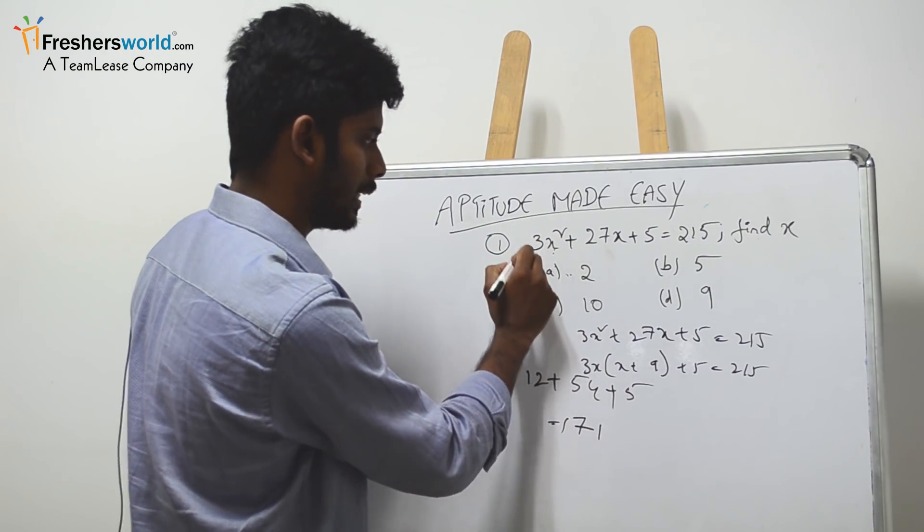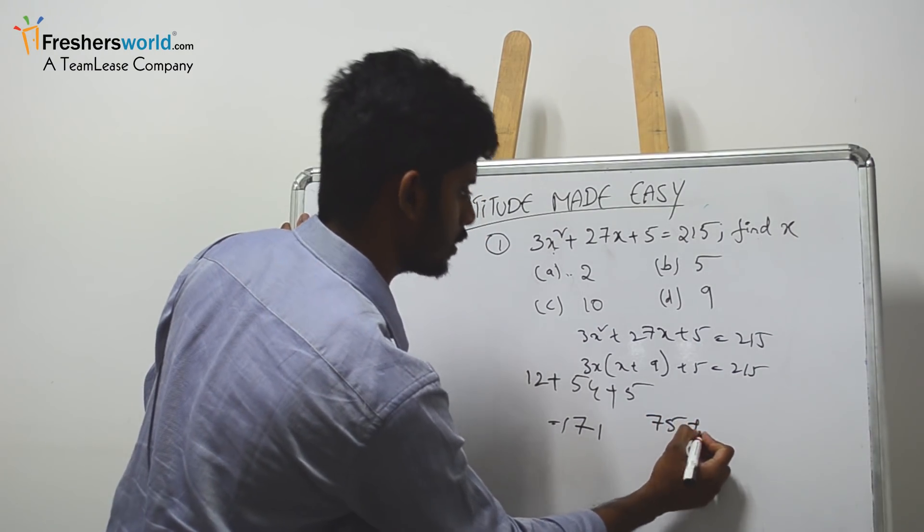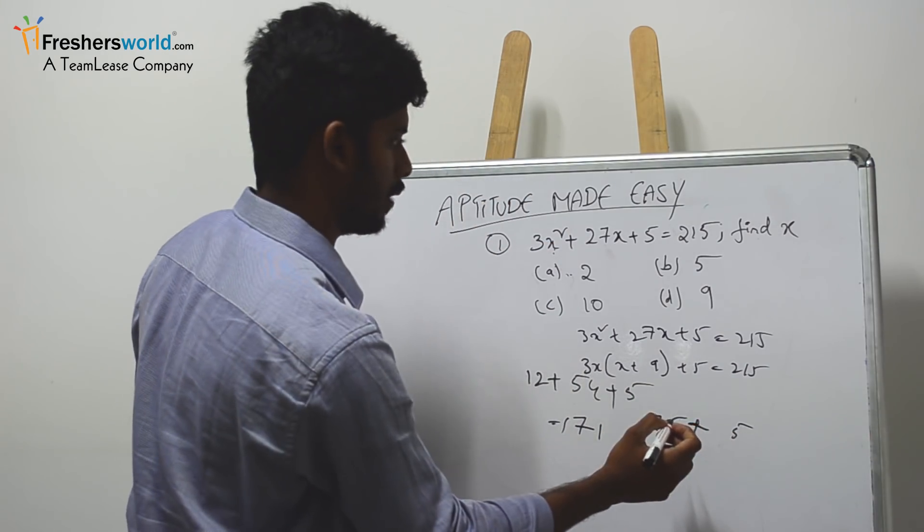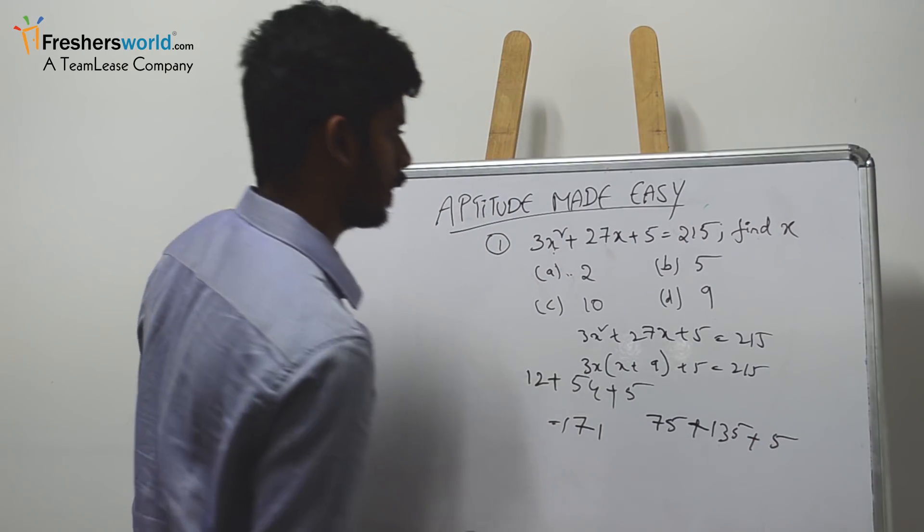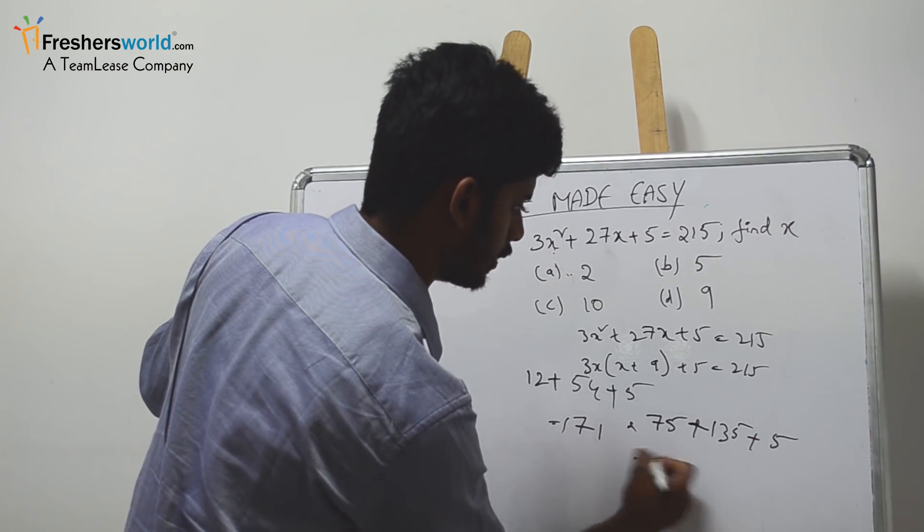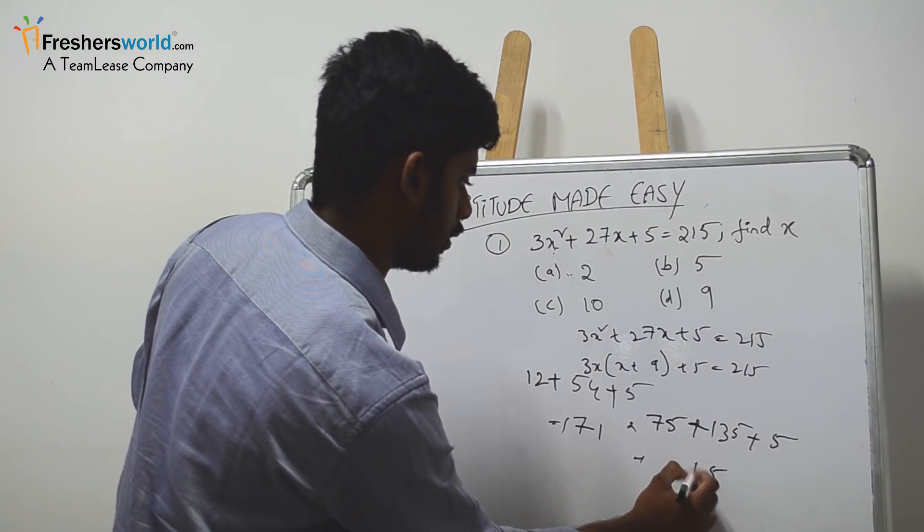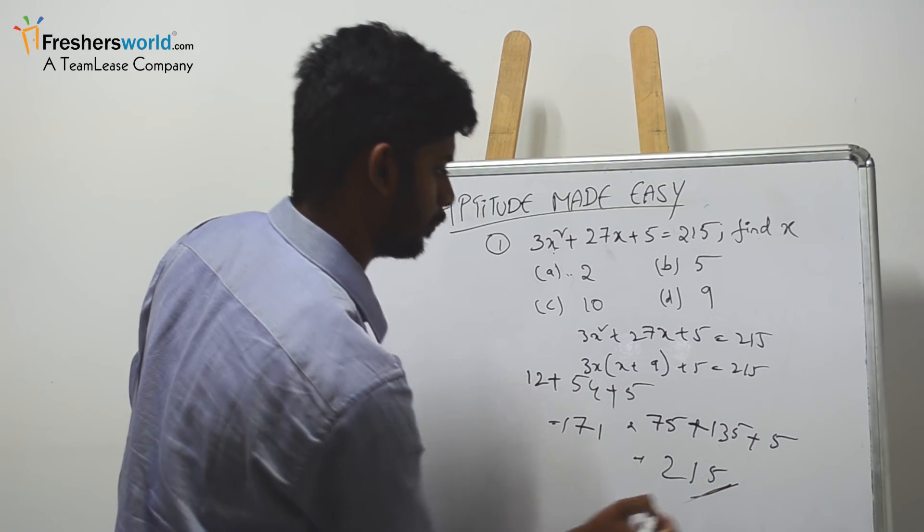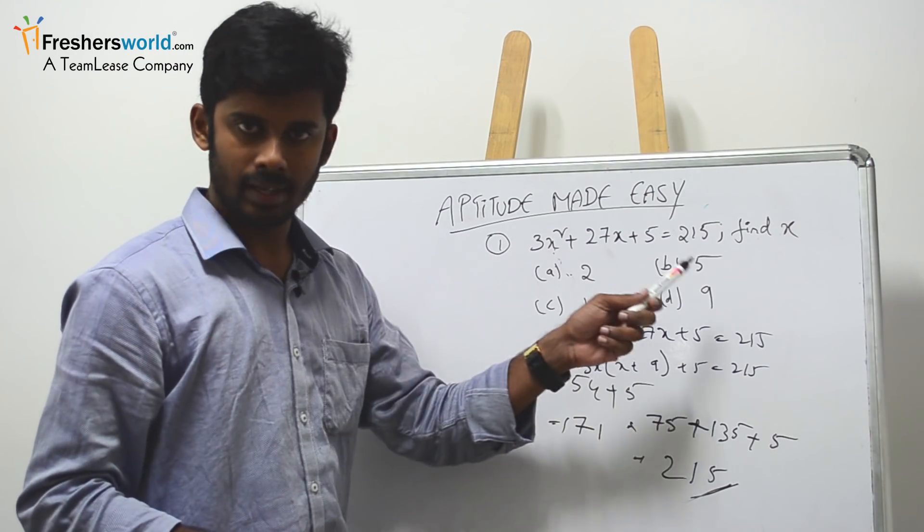Let's go for 5. 5 square is 25, 25 threes are 75, plus 5 into 27 is 135, plus 5. Just add the sum: it's 15, 1 plus 3 is 4, 4 plus 7 is 11, so we get 215.